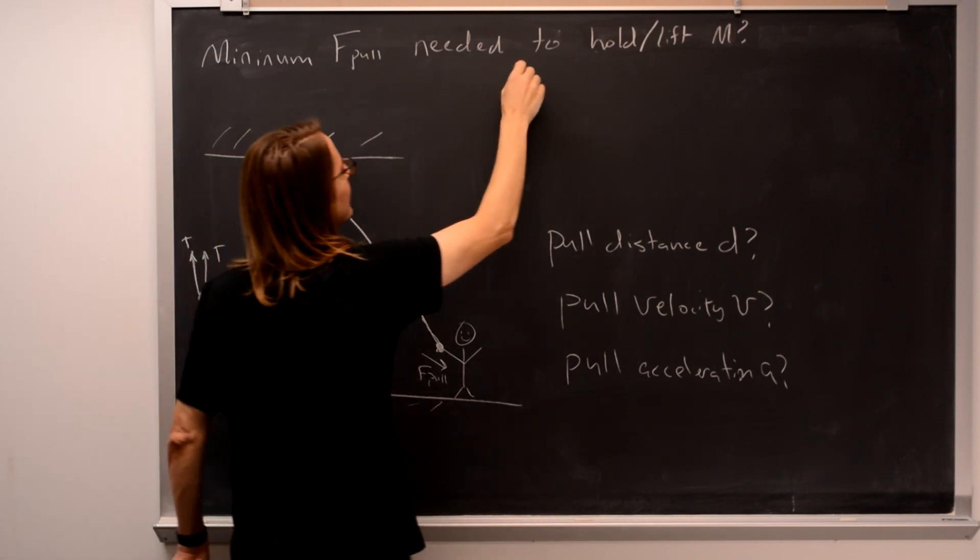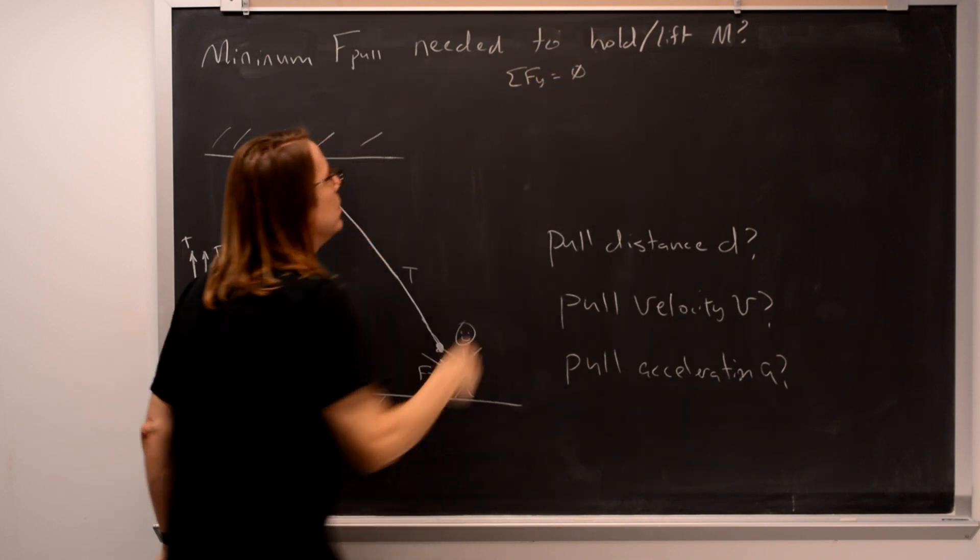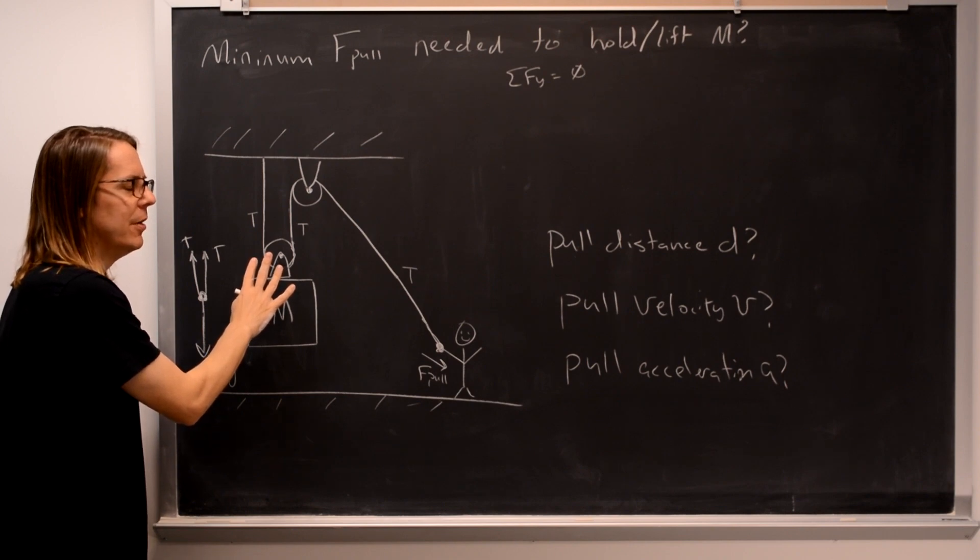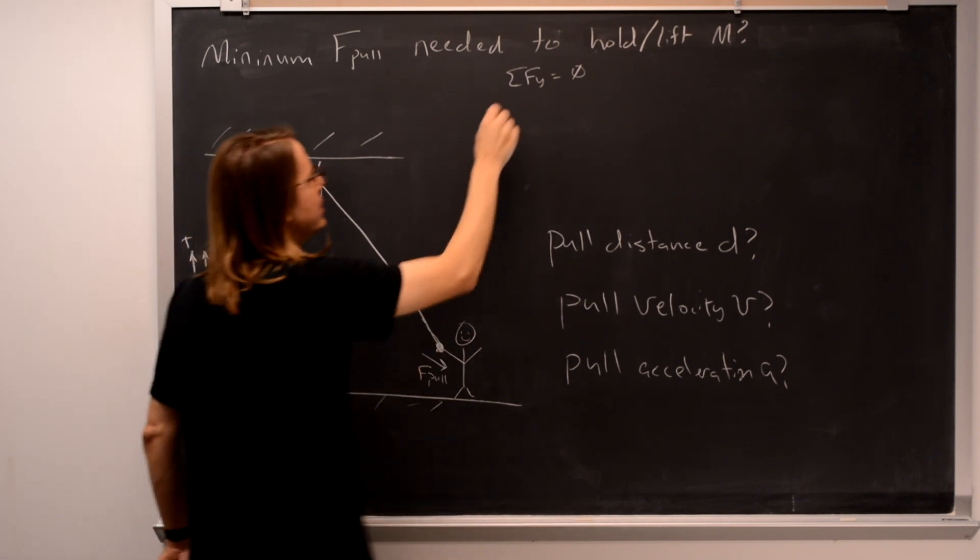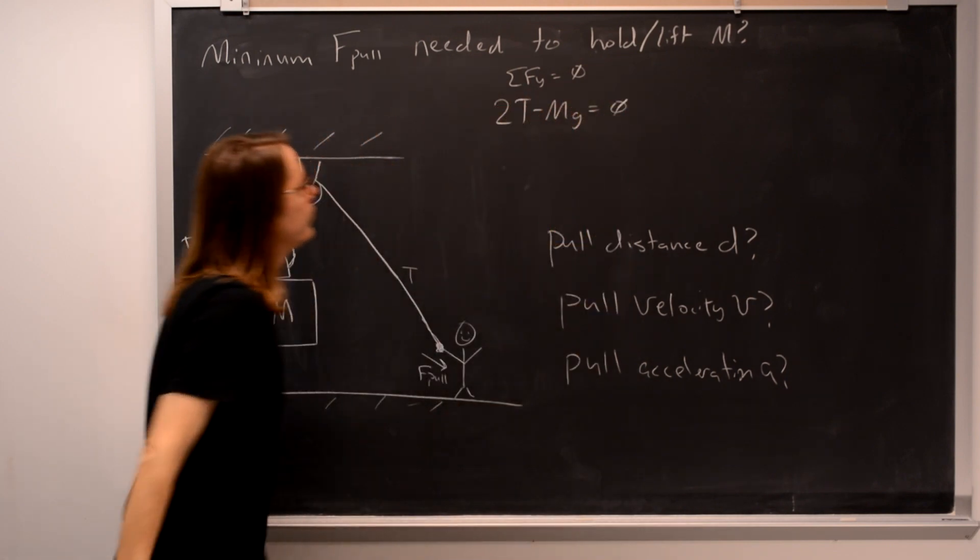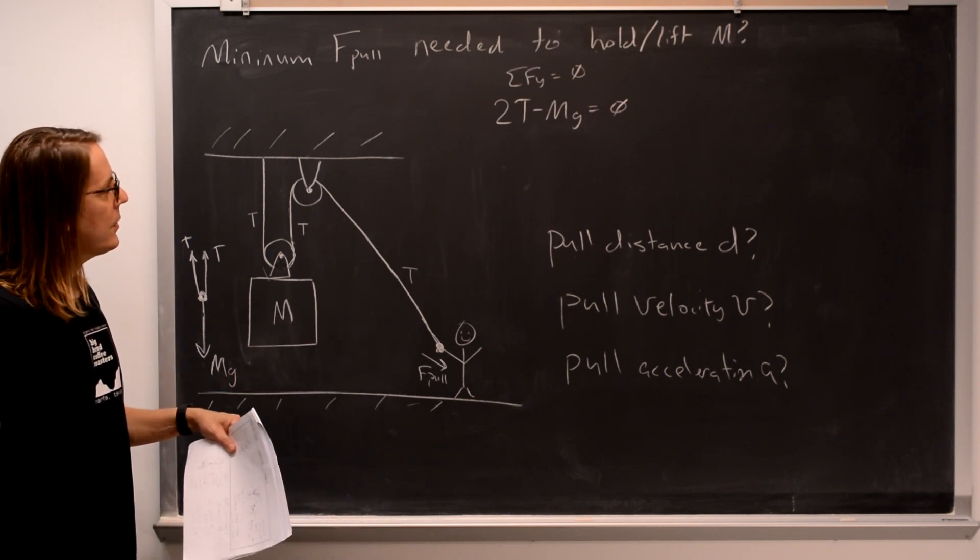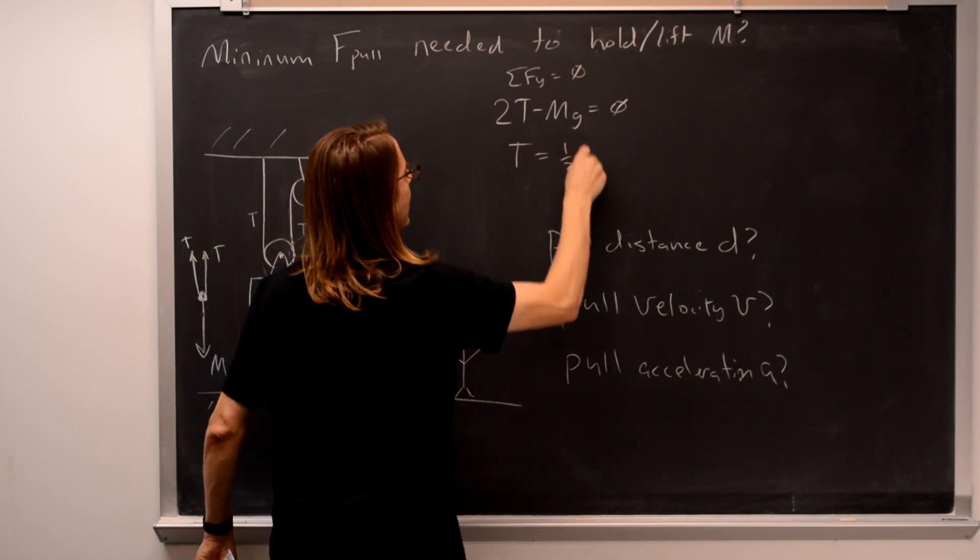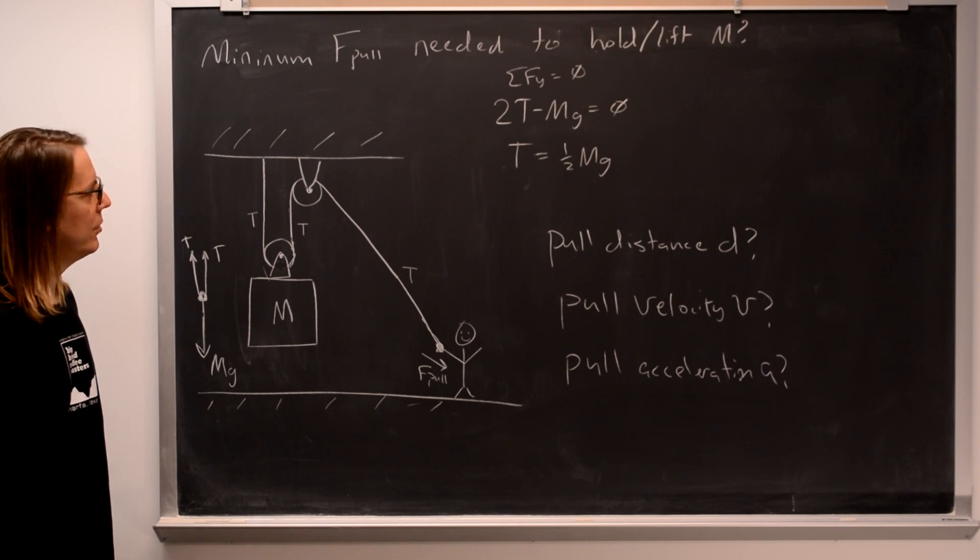The thing we care about is this mass, and it's being pulled up with two tension forces. So we think of the mass then, the sum of the forces in the Y equals, and we're going to say zero. We want to know what does it take to hold it in the air, because that's the minimum of then what it takes to lift it. So it's just 2T minus MG. You can solve that and say that the tension that you need is one half of MG, one half of the weight, one half of the weight of the box.